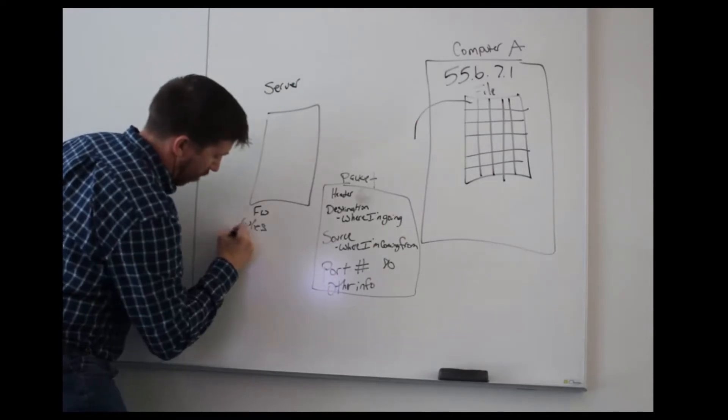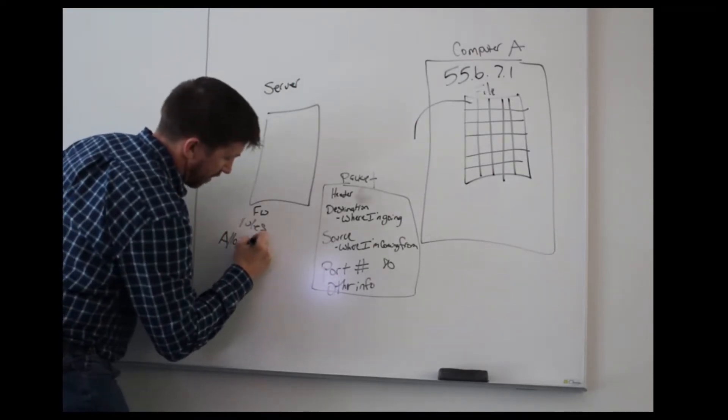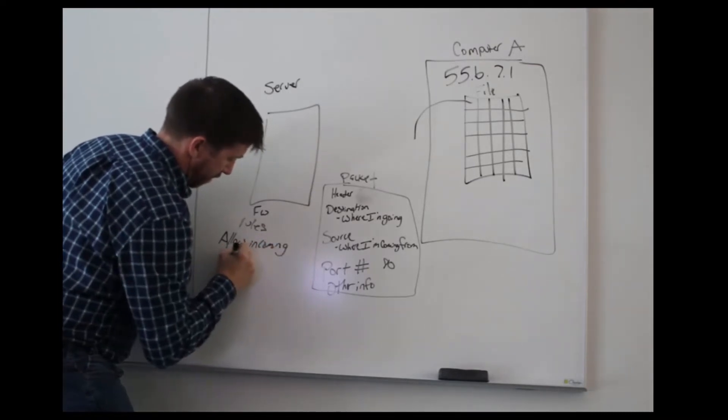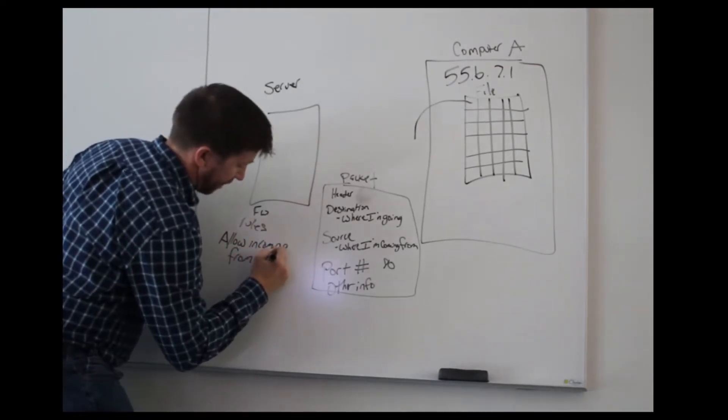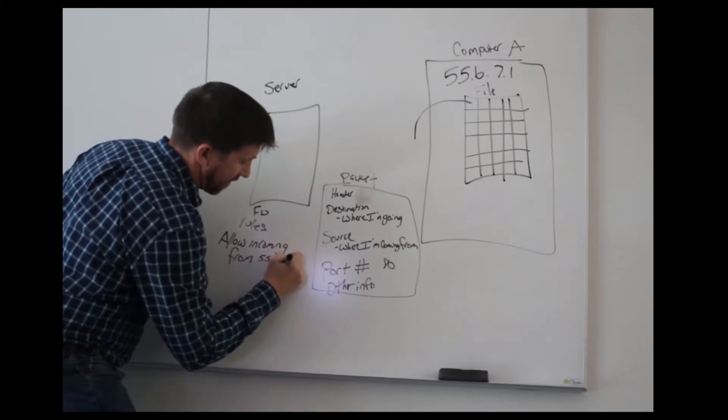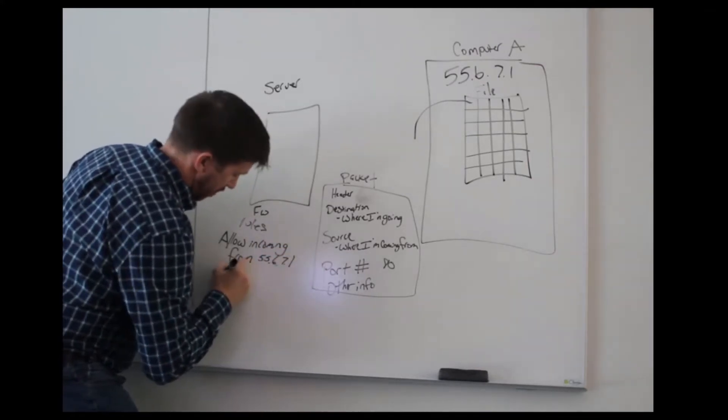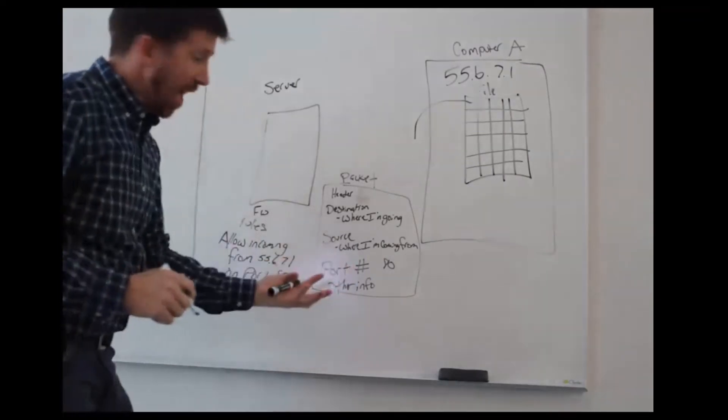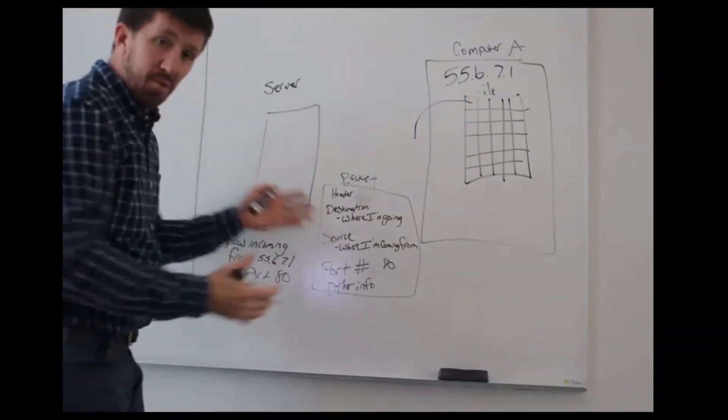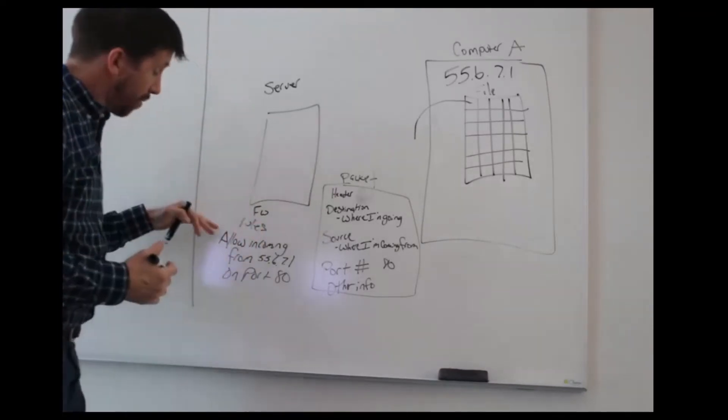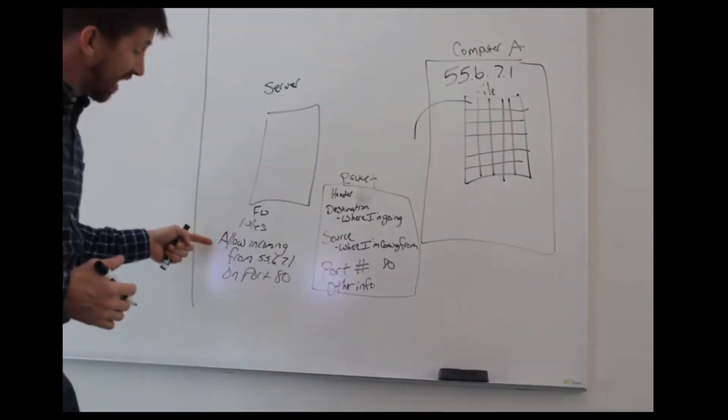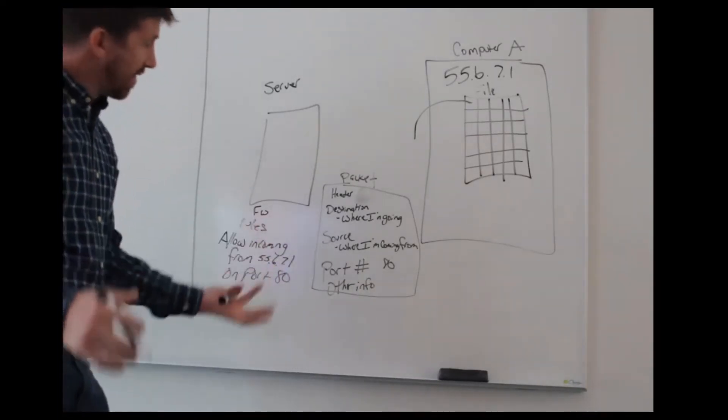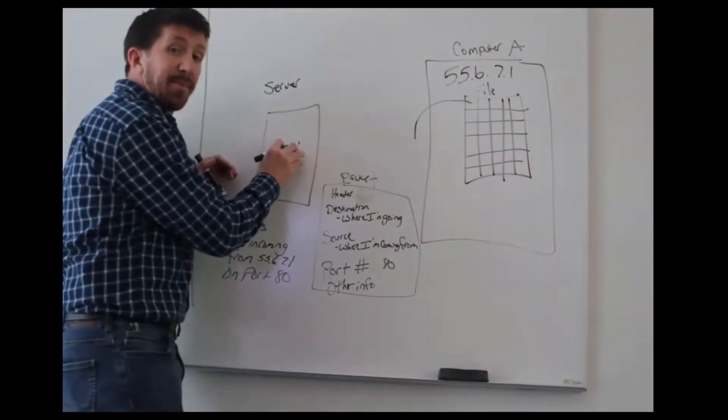The rules here say allow incoming from 55.6.7.1 on port 80. And so that packet will arrive at the firewall. The firewall will look at it and say, I have a rule that says allow incoming traffic from 55.6.7.1 on port 80. And that packet would then go through and be processed by the server.